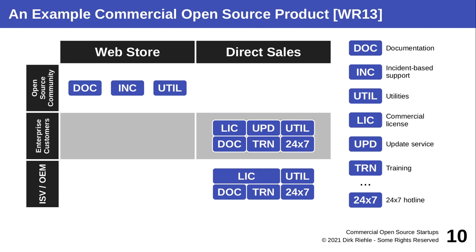Enterprise customers used the BI application as a whole, while OEMs paid only for the library and embedded it in their own products. For these two variants, there were two different licenses. Enterprise customers had a classic license subscription with an initial license fee and maintenance revenue. OEMs always had to buy a perpetual license because they didn't want the license to terminate while their own product was still in use. The components being sold included a license to use, access to the update service, added functionality, documentation, training, and different support levels.